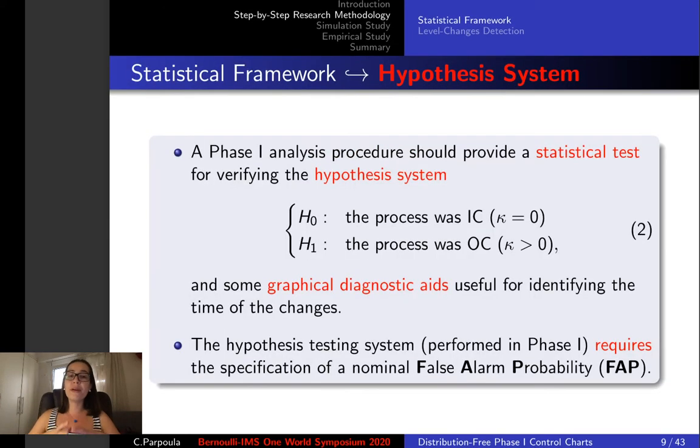We need to verify the hypothesis system that the process was in control against the alternative that the process was out of control, and this system requires the specification of a nominal false alarm probability.